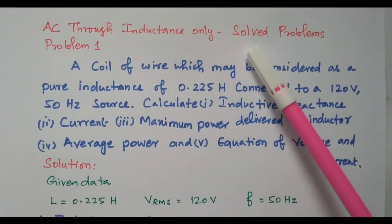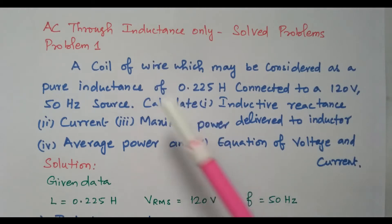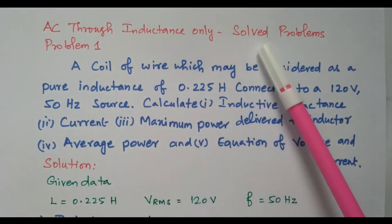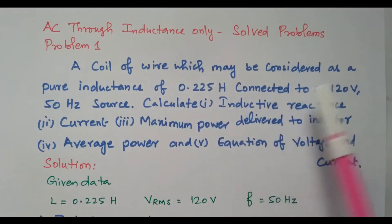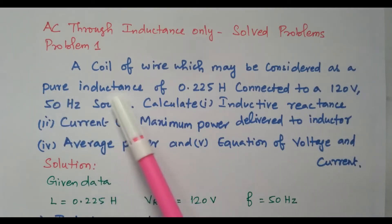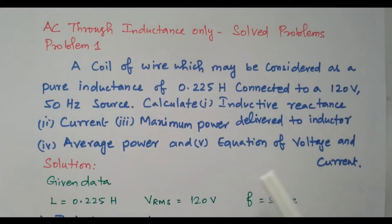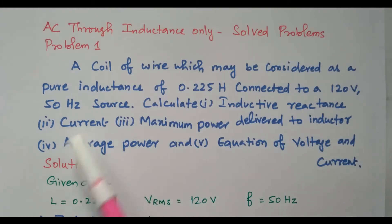Welcome viewers. In this video we will see solved problems based on AC through inductance only. If the circuit contains only inductance energized by AC, we will see problems based on that. The first problem is: a coil of wire which may be considered as a pure inductance — pure inductance means only inductive effect, the resistance is not considered — of 0.225 Henry connected to a 120 volt, 50 Hertz source. Calculate inductive reactance, current, maximum power delivered to the inductor, average power, and equation of voltage and current.